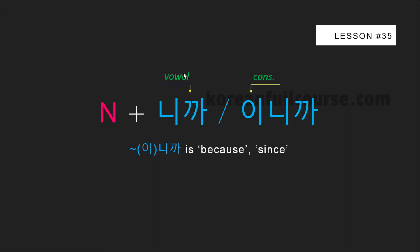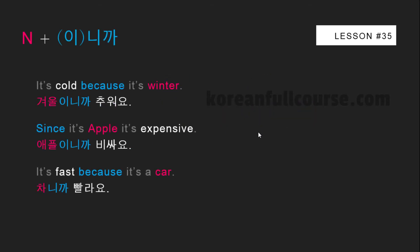You can use 니까 not only with verbs and adjectives but also with nouns. If a noun ends with a vowel, use 니까; and if it ends with a consonant, use 이니까 — not 우니까. Examples: 'It's cold because it's winter' — '겨울이니까 추워요.' 'Since it's Apple, it's expensive' — '애플이니까 비싸요.' 'It's fast because it's a car' — '차니까 빨라요.' Again, in Korean a reason should go first.